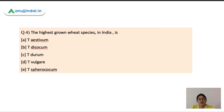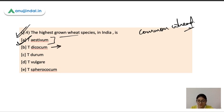The next question is the highest grown wheat species in India is? So highest grown wheat species which we call common wheat or bread wheat is your Triticum aestivum. These are the botanical names of the different species of wheat. Then you have Triticum dicoccum which is your emmer wheat. And Triticum durum is your macaroni wheat. And Triticum vulgare and sphaerococcum are the dwarf wheat.